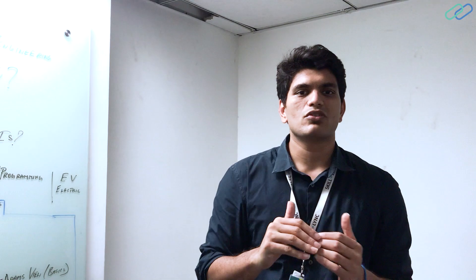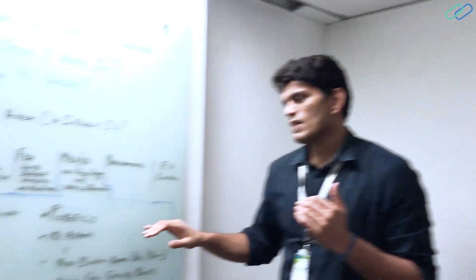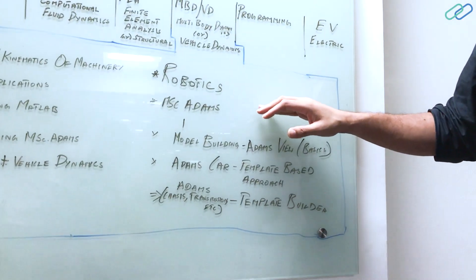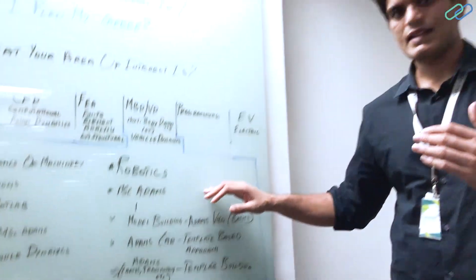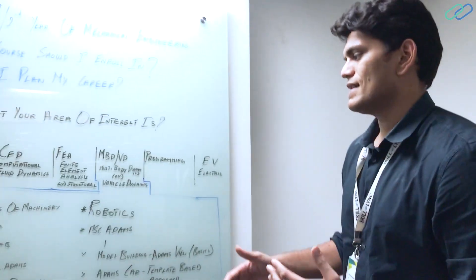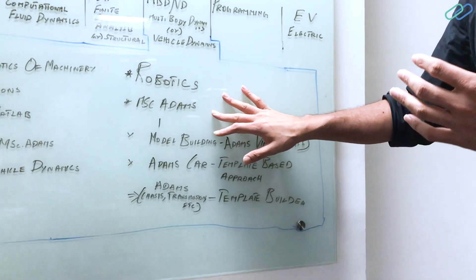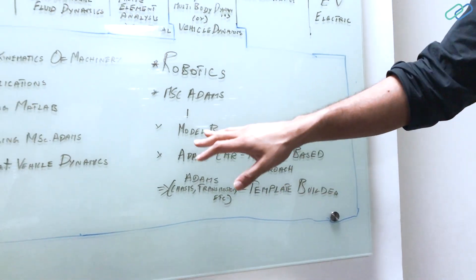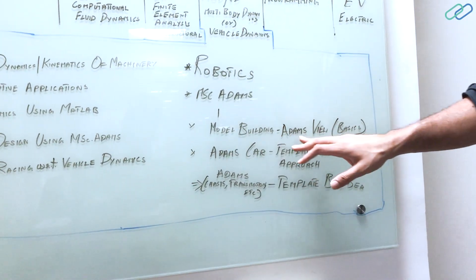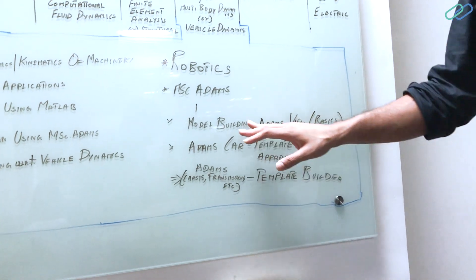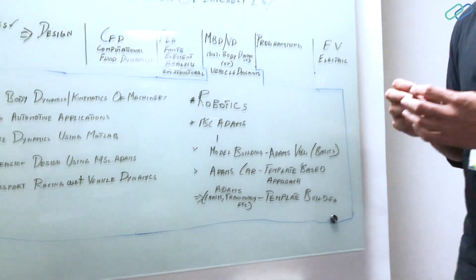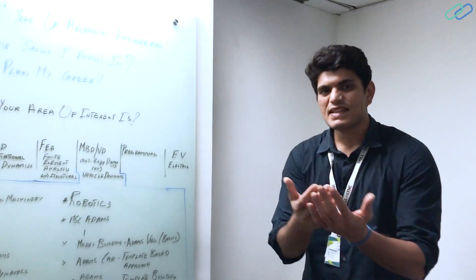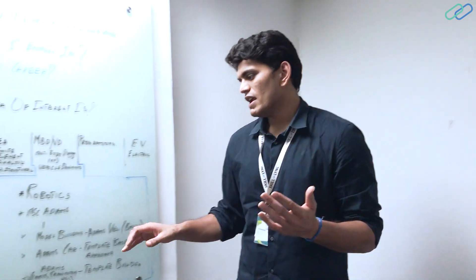How do I move to stage two? So stage two is where you focus on say robotics or vehicle dynamics itself, but it has two phases. Say I'm taking vehicle dynamics using MSCA Adams. There is something called Adams View where you build the models from scratch. So it's the basics of model building in Adams View.